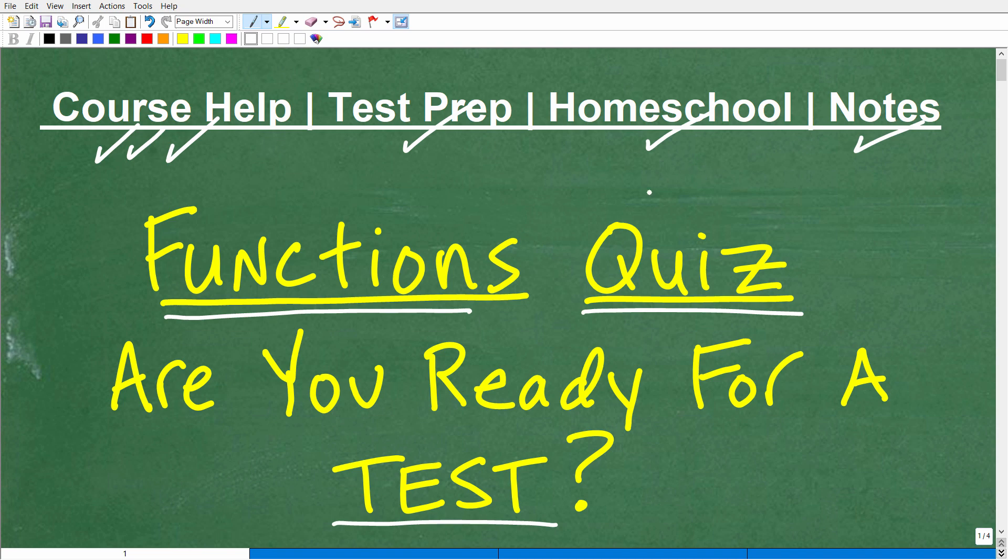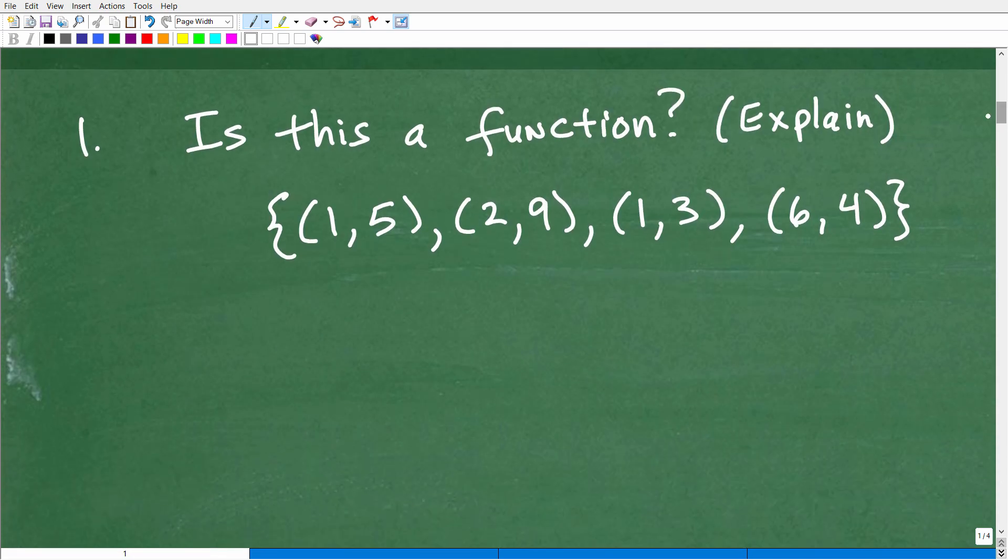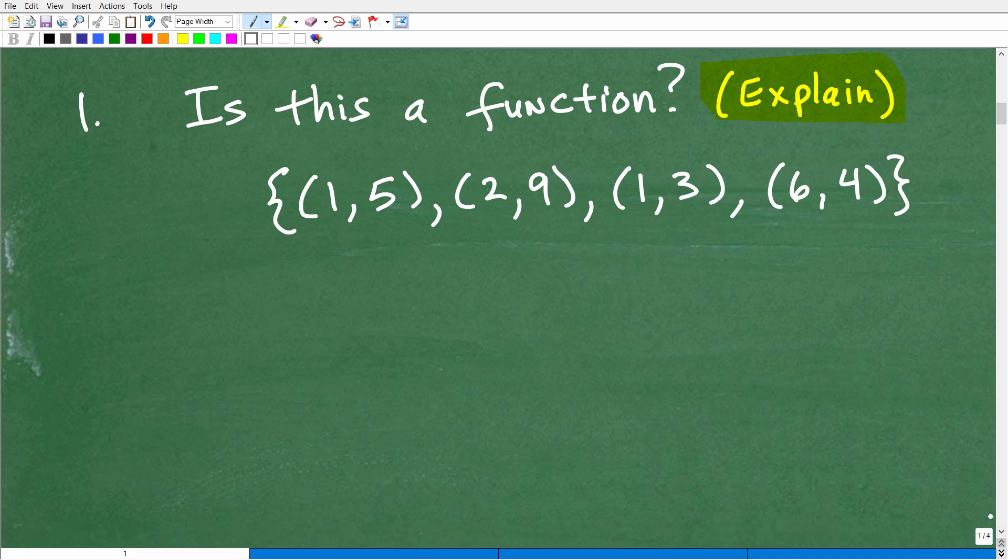Okay, so here we go. Maybe you want to go ahead and get a piece of paper and a pencil out, and we'll just take these questions one by one. All right, so I'm going to give you an opportunity to answer the question before I tell you the answer. So let's start off with our first question. And the question is, is this a function? And I want you to explain, in other words, justify your answer. So here we go. It's a set of points. So I have the points (1,5), (2,9), (1,3), and (6,4). Please tell me if this is a function, yes or no. Okay, and again, explain your answer. Okay, so if you want to pause the video and work on this, that's excellent. But I am going to go ahead and start answering this right now.